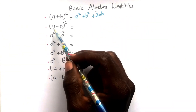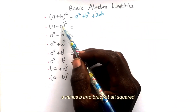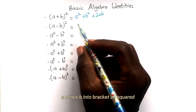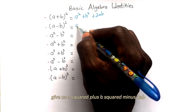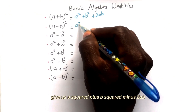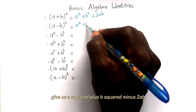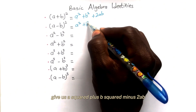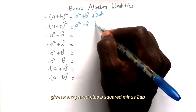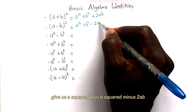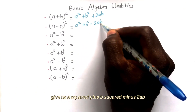(a minus b) all squared gives us a squared plus b squared minus 2ab.